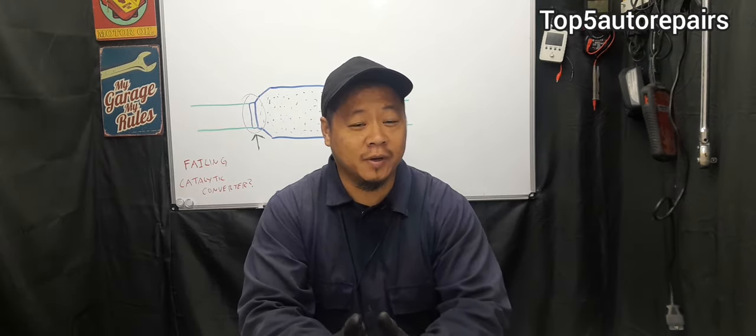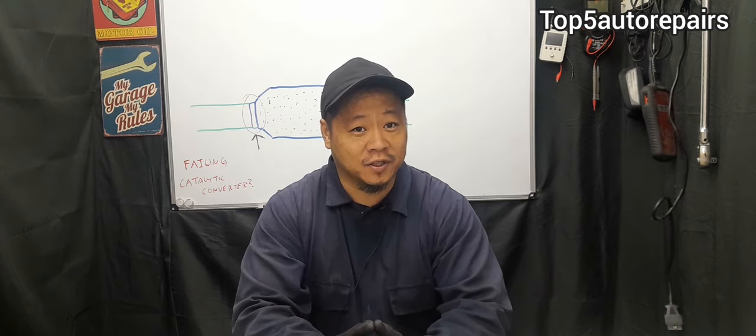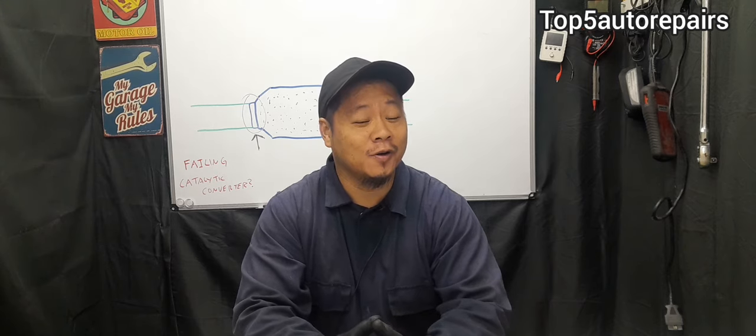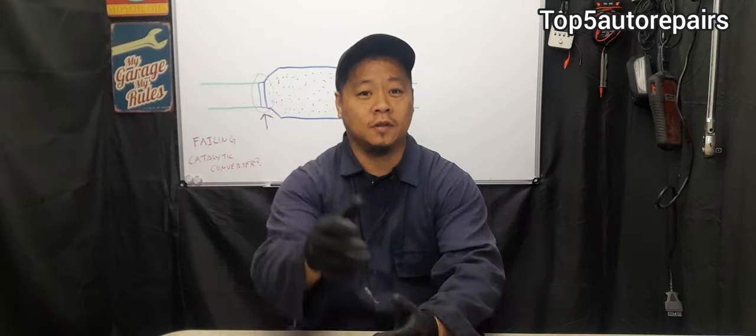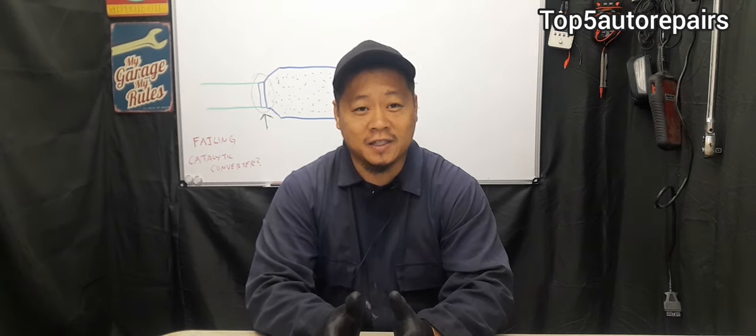But what if you have extremely low mileage? For example, let's just say only about 70,000 miles and you're already getting a P0420 code. What can be the cause? The most common cause is going to be an engine misfire.